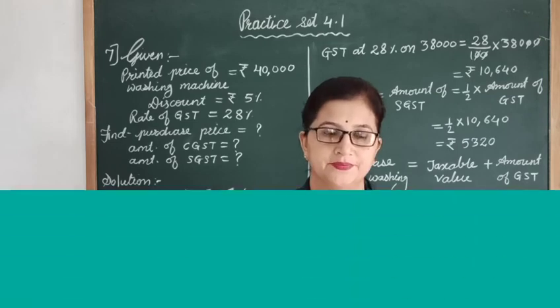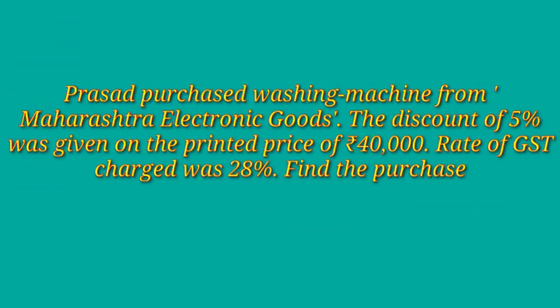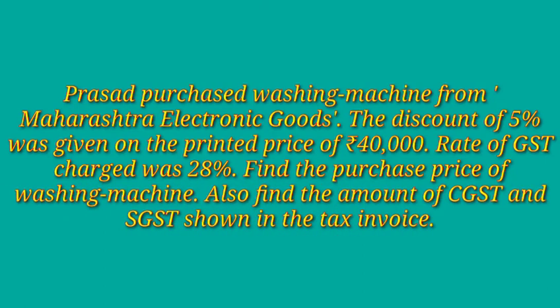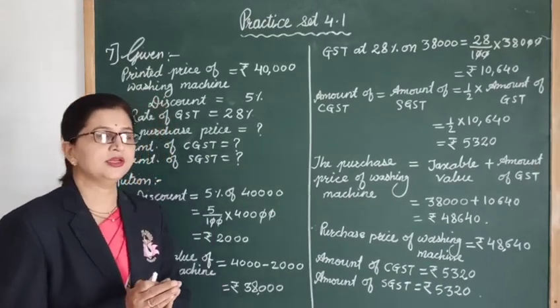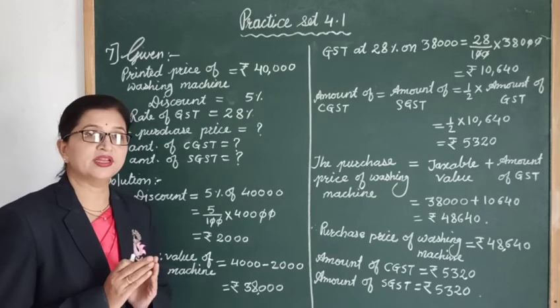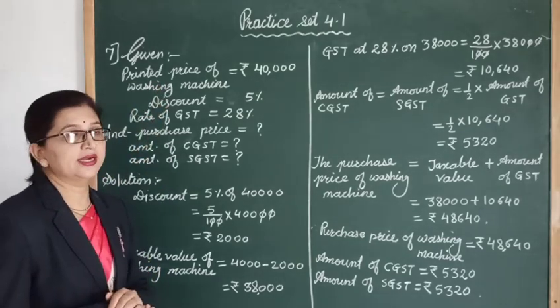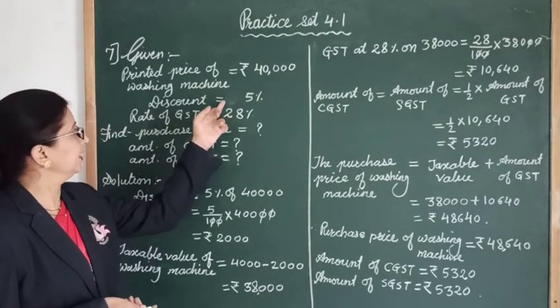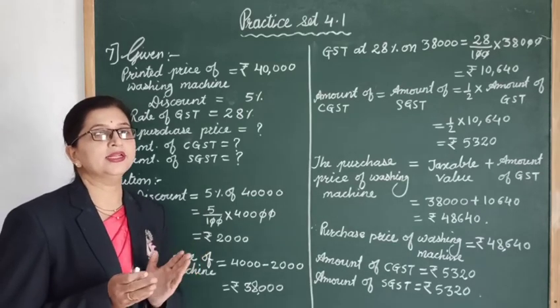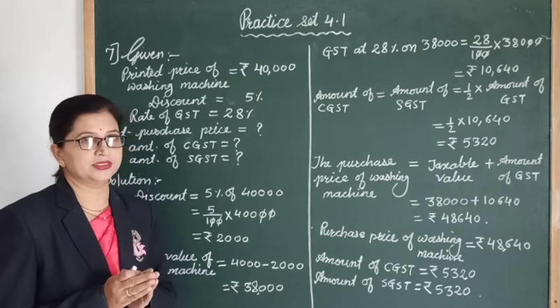Question number 7: Prasad purchased a washing machine from a Maharashtra electronics booth. A discount of 5% was given on the printed price of 40,000 rupees. The rate of GST charged was 28%. Find the purchase price of the washing machine, and also find the amount of CGST and SGST shown in the tax invoice.